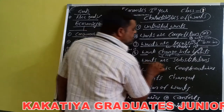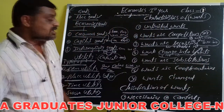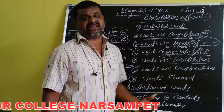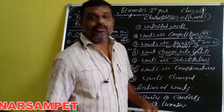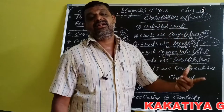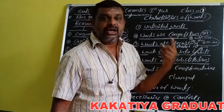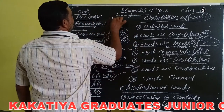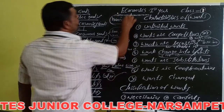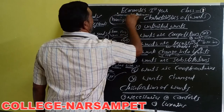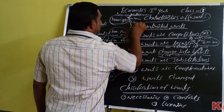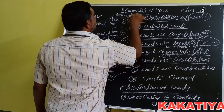Wants are substitutions. Human wants can be satisfied by various types of commodities. For example, hunger is a want, but it can be satisfied by eating rice, banana, samosa, or biryani — any one commodity can satisfy that want.